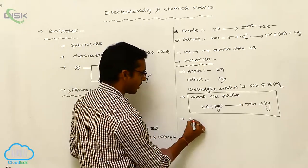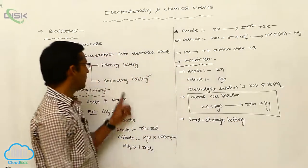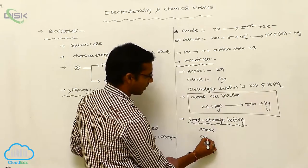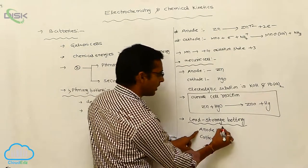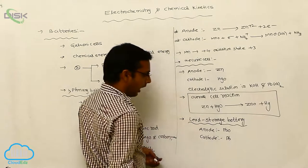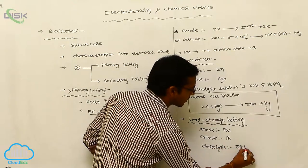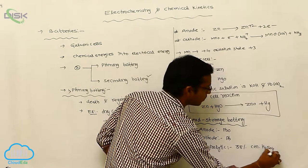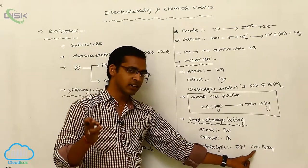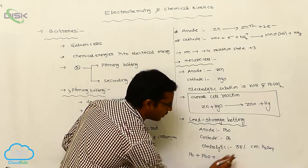The best example of a secondary battery is the lead storage battery. Like any battery, it contains two electrodes. In the lead storage battery, the anode is lead oxide, the cathode is lead, and the electrolytic solution used is 38 percent concentrated sulfuric acid (H₂SO₄).